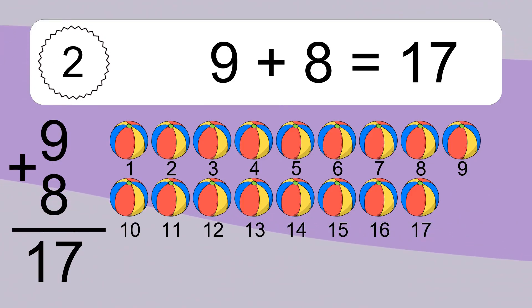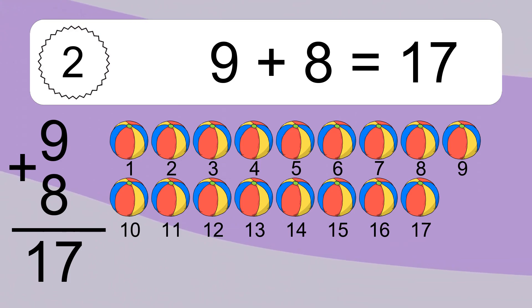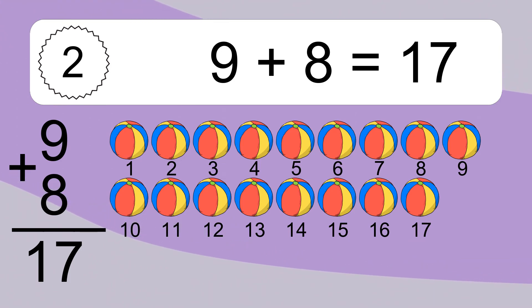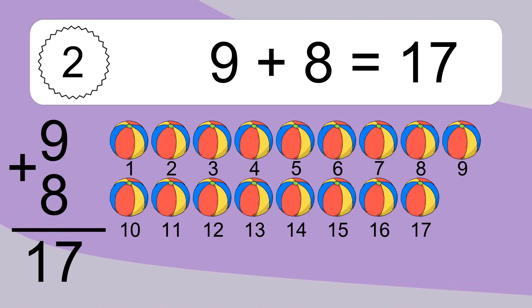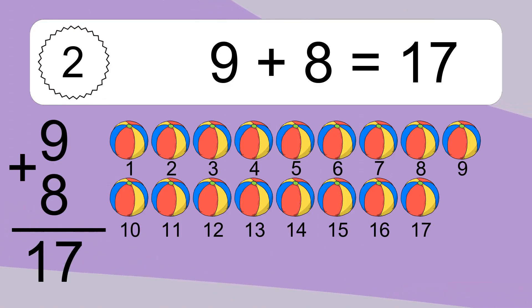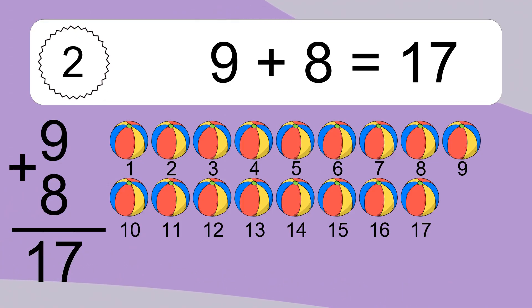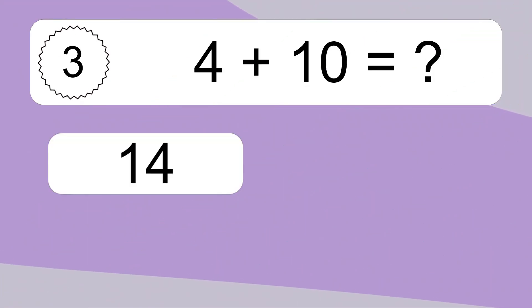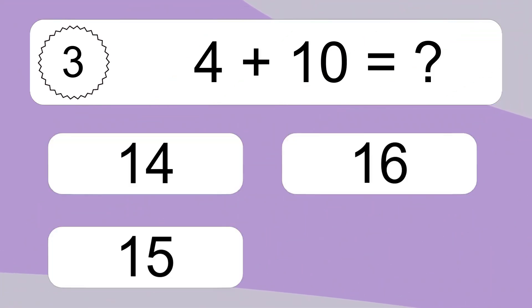1, 2, 3, 4, 5, 6, 7, 8, 9, 10, 11, 12, 13, 14, 15, 16, 17. 4 plus 10 equals what?